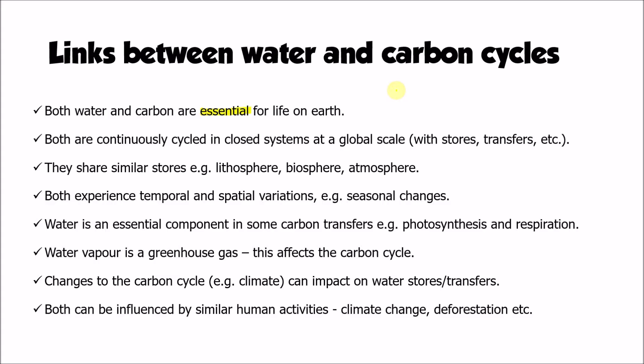Both of these elements are also continuously cycled around the Earth's systems in a closed system at a global scale. We have a limited amount of water and a fixed amount of carbon on the planet, and both cycles can be considered as systems with stores, transfers, and flows. Water and carbon cycles also share similar stores — the lithosphere, biosphere, atmosphere, hydrosphere, and cryosphere are all stores of both.